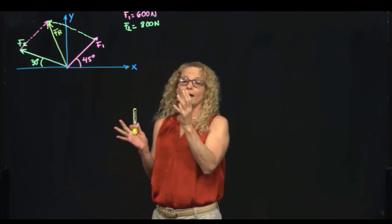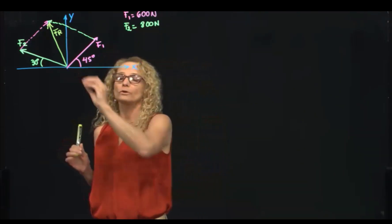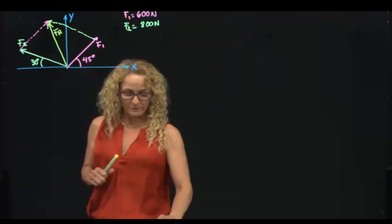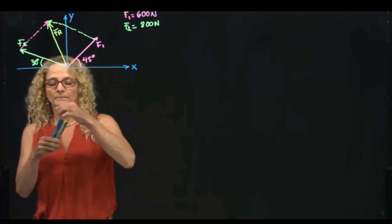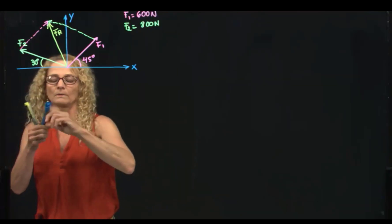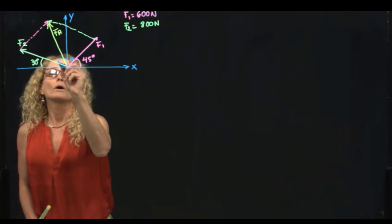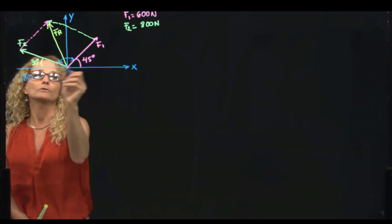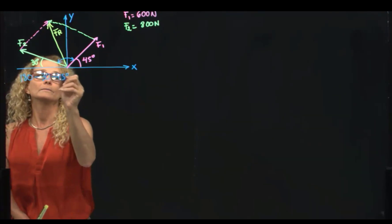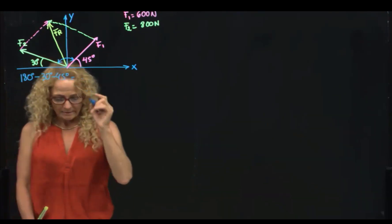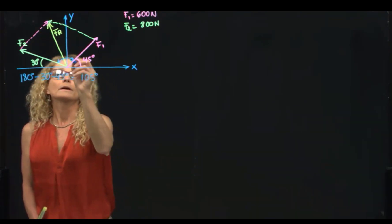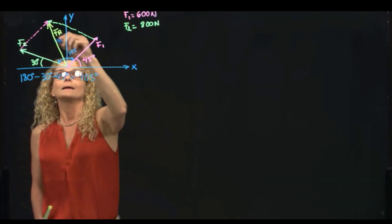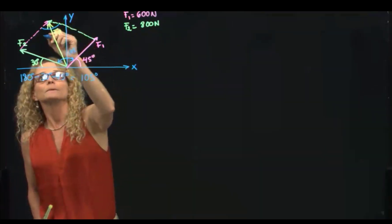Now we have to find all the angles that constitute our parallelogram. The first angle that we want to find is this one right here. As you recall, that angle would be 180 minus 30 minus 45, and that's 105. So we have found this angle, and as you know, this angle over here will be exactly the same.